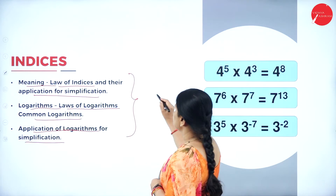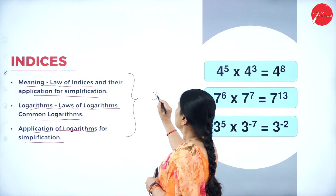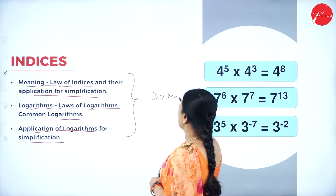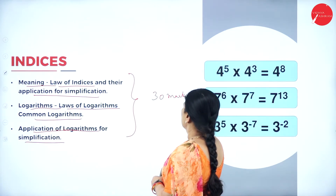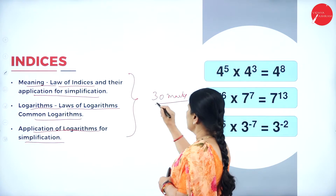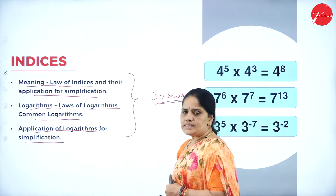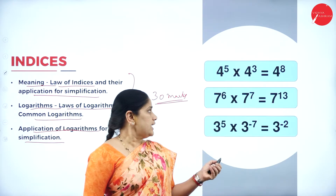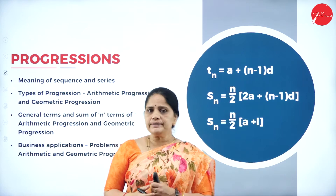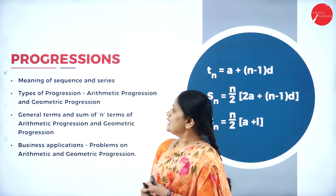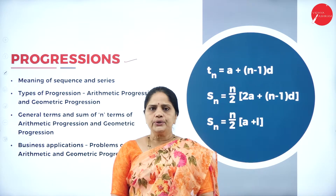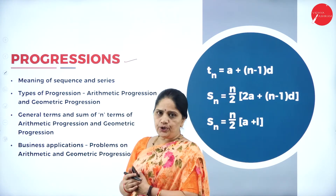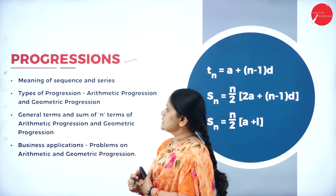From the indices chapter, usually we get mark questions for almost 30 marks. Then the next chapter, unit 2, will be related to progressions.